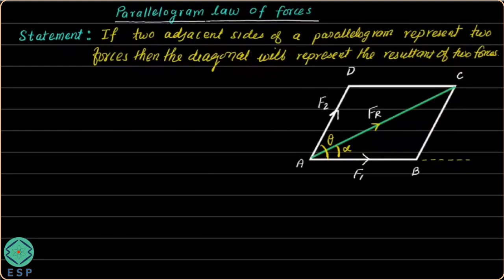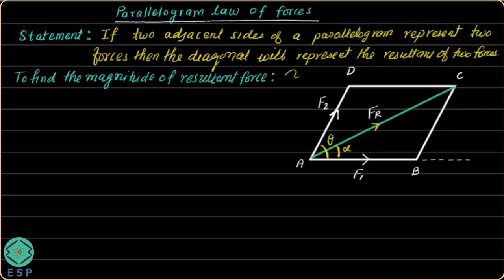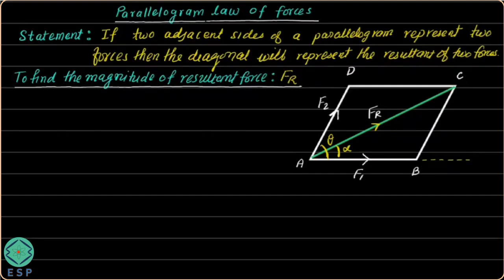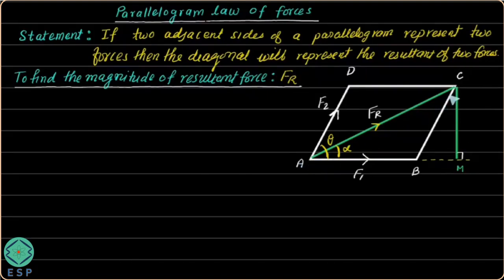First part: finding the magnitude of resultant force FR, which equals the length AC. To find length AC, I will do a small construction — draw a perpendicular from point C to segment AB, meeting at point M. This angle is 90 degrees. Using triangle ACM with angle M = 90°, by Pythagoras theorem I can find the value of AC.